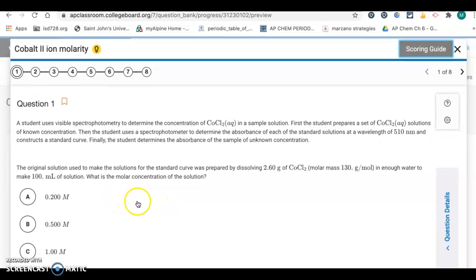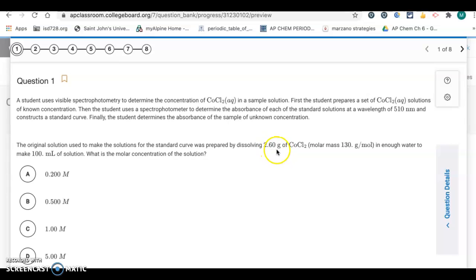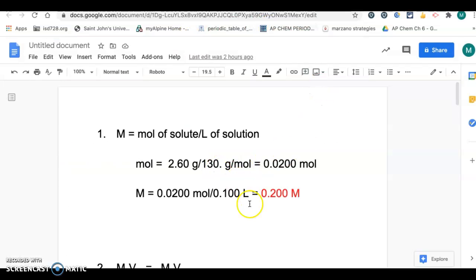What's the molar concentration of the solution? So we want to calculate the molarity. Molarity is moles divided by liters, so we have to convert the 2.60 grams into moles, and then we have to convert 100 milliliters into liters, and I showed that calculation right over here. So here's that calculation. The molarity equation, it's moles of solute divided by liters of solution. So to get moles, we take the mass that's given in the problem divided by the molar mass, and we get 0.0200 moles, and then to get the molarity, now we divide that number of moles divided by the liters. So 100 milliliters is 0.100 liters, and this is our answer right there, 0.200 molar.